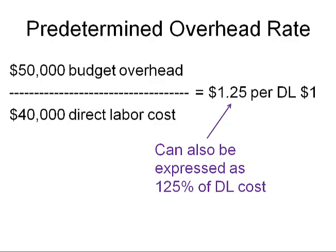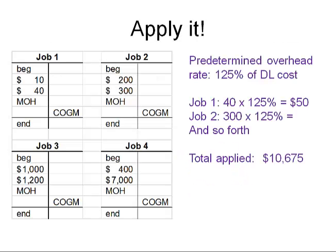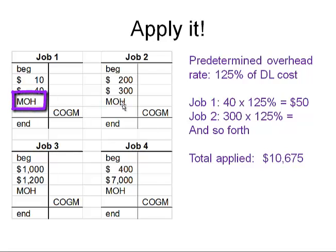So what are we going to do with this predetermined overhead rate? We're going to use it to populate our T-accounts — our work in process for each of the jobs. Here are the jobs again without any overhead assigned yet. We would use the 1.25 and apply it to the direct labor in each of the four accounts. Each of those direct labor amounts would be multiplied by 1.25, or 125%. If you want to check, freeze this frame and apply it to each of the four — you should get $10,675.